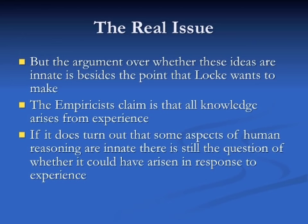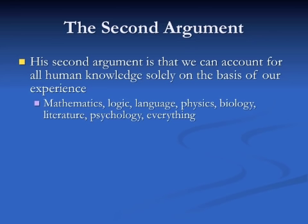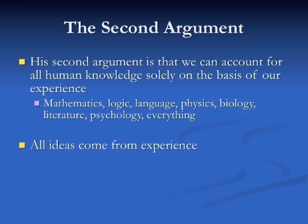This leads to the next issue: Locke wants to show that we can account for all human knowledge solely on the basis of experience. On one hand, he argues not everyone shares the same innate ideas, giving evidence they aren't innate. And he can also give a positive account showing how everything we think we know can ultimately be built up out of things we have experienced. This includes everything: mathematics, logic, language, physics, biology, literature, psychology — everything. The goal is to show how all of this is ultimately traceable back to experience.